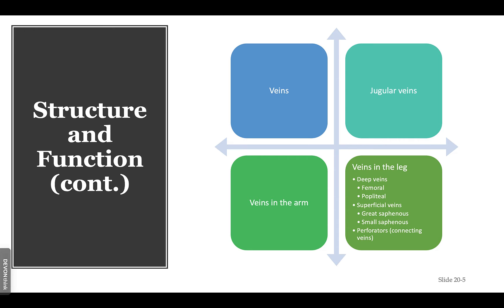The purpose of the veins in the arms is to provide nutrients to the tissues throughout the rest of the body. For the legs, notable deep veins are the femoral and popliteal. The most prominent superficial veins are the great saphenous and small saphenous. Perforators are the connecting veins — we have them all over.